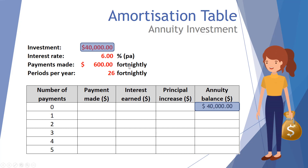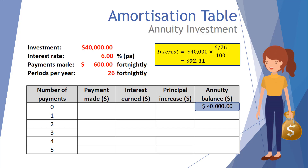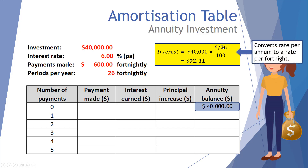First, we place $40,000 in the top right-hand corner as our starting annuity balance. Next we calculate the interest earned on that amount. We take $40,000 and apply the interest fraction: 6% divided by 100, then divided by 26, because there are 26 fortnights in a year. This converts our annual rate of 6% to a rate per fortnight.